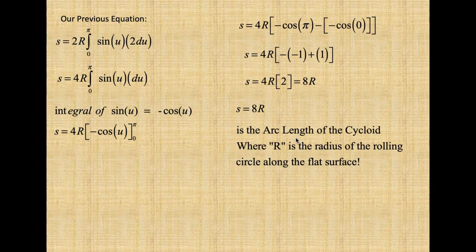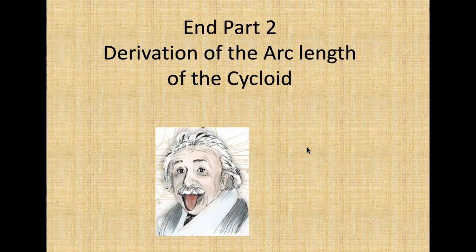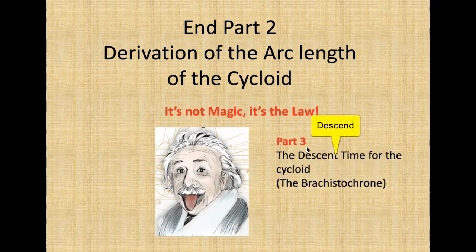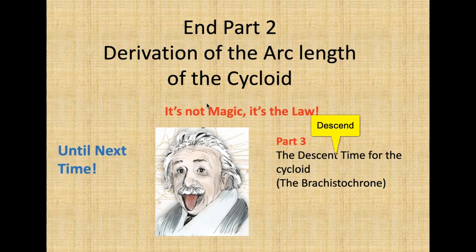s = 8R is the arc length of the cycloid, where R is the radius of the rolling circle along the flat plane. That's it — this is the end of the derivation of the arc length of the cycloid. It's not magic, it's the law — mathematics. In Part 3, we will calculate the descent time: how long it takes to travel from A to B. I hope you learned something. See you next time.